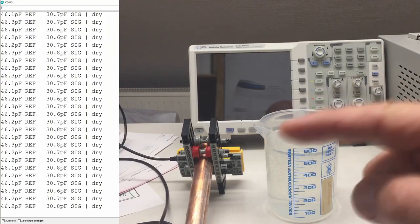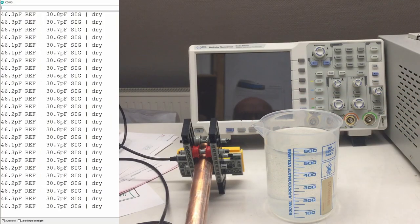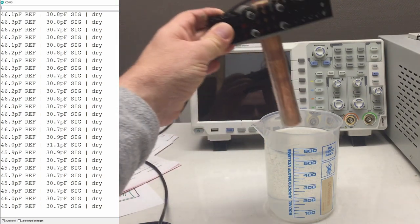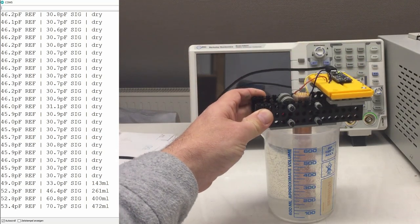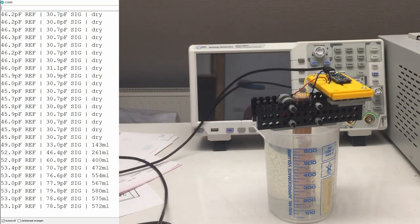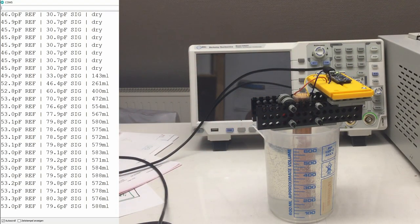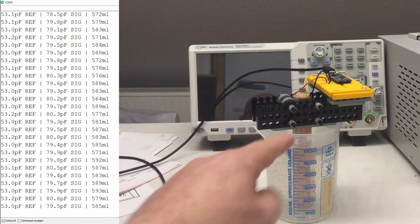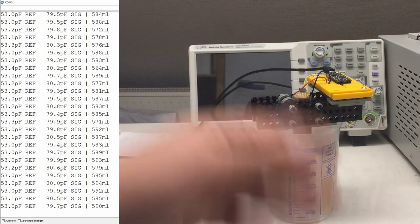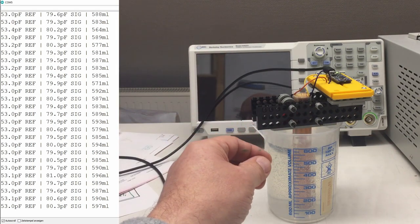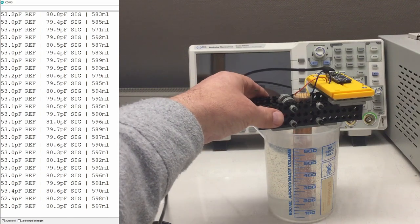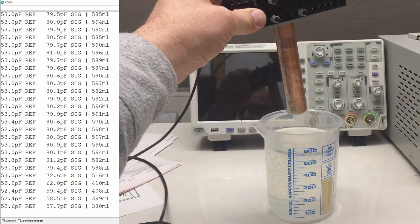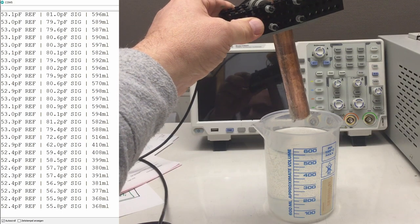Again, watch the readings over there. We are dry. And now we put the sensor into the water and we get a reading of 560, 80 picofarads. So a little bit smaller total capacitance than without that isolation stuff. And now let's remove the sensor.